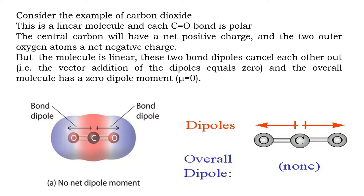Consider the example of carbon dioxide, CO₂. Oxygen is more electronegative than carbon, so the carbon-oxygen bond is polar. Oxygen attracts the shared pair of electrons from the carbon; hence, carbon gains a partial positive charge and oxygen gains a partial negative charge. Since dipole moment is a vector quantity, we can show the direction of the dipole moment.